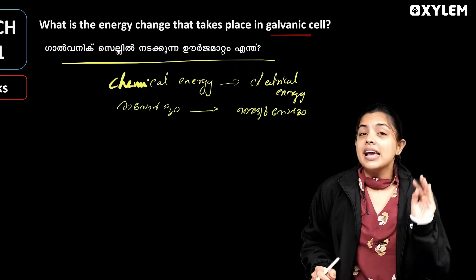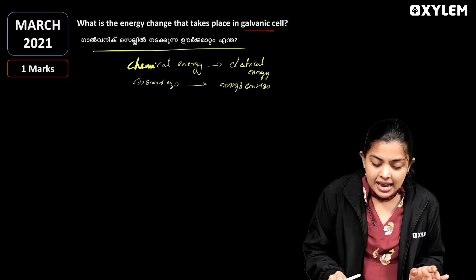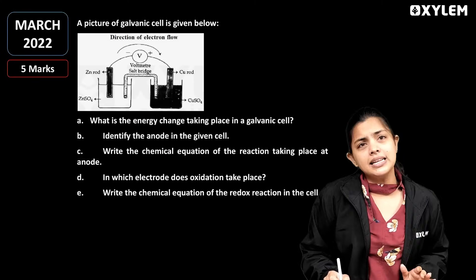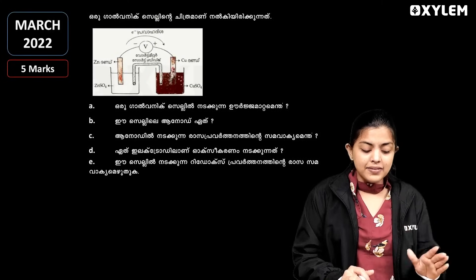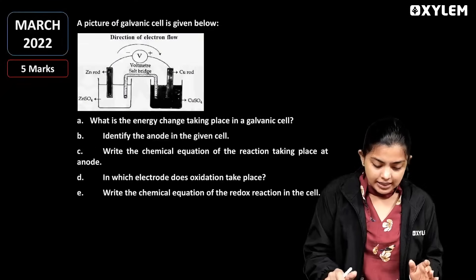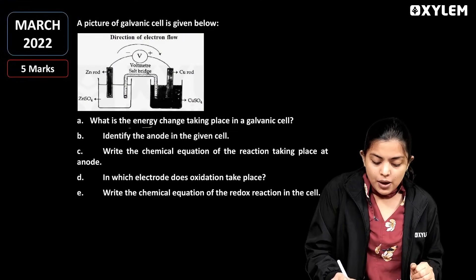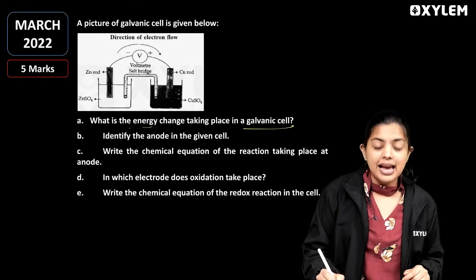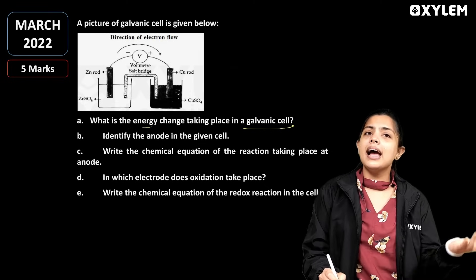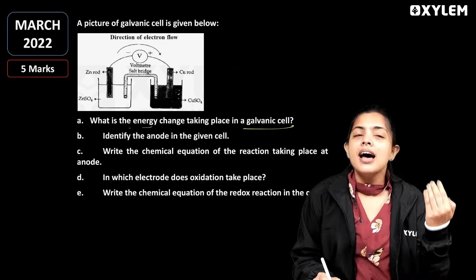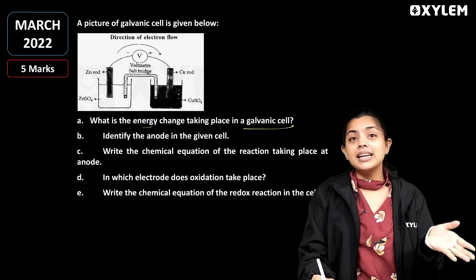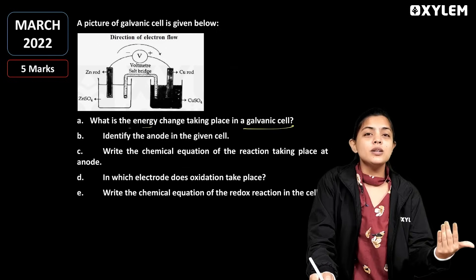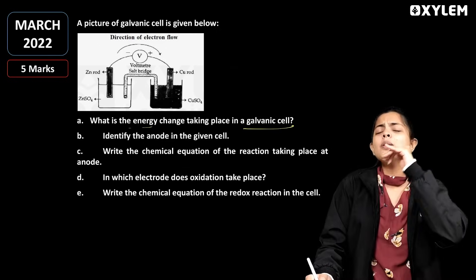Let's talk about the Galvanic Cell. What is the energy change taking place in the Galvanic Cell? The Galvanic Cell converts chemical energy to electrical energy — that's what we think.